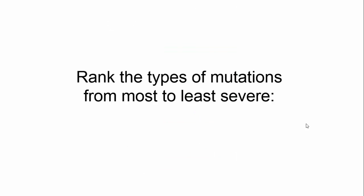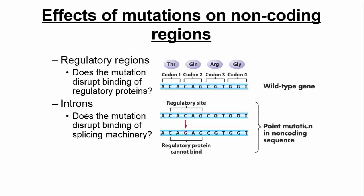Whenever you have different mutations, think if you can rank them. It's not always possible to make all comparisons — some comparisons we can't make because it's just too vague — but there are some that are pretty clear. What are the effects of mutations on non-coding regions? If it's in a regulatory region, it might disrupt regulatory proteins — you might not get transcription at all. If it's in an intron, it's usually not a big deal, unless it disrupts the splicing machinery.